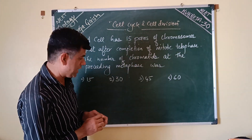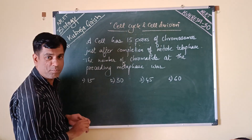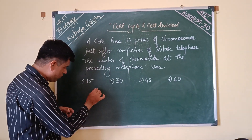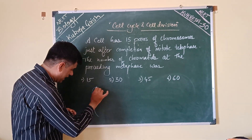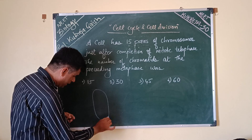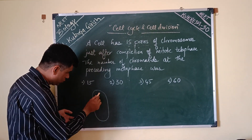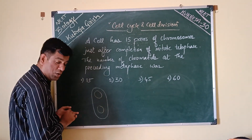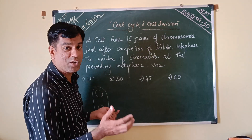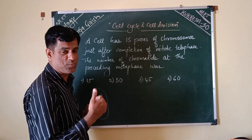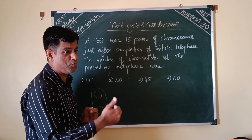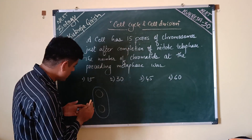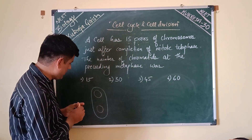It is mitotic telophase, not meiotic. If you remember and recall the diagram, in mitotic telophase the two nuclei are formed — we are at the end of karyokinesis. Mitosis proceeds as prophase, metaphase, anaphase, and then telophase. So here you have 15 pairs.